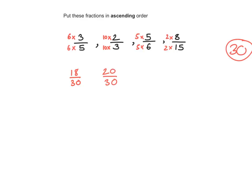The next one: 5 times 5 is 25, so that's 25 over 30. And 2 times 8 is 16, so that's 16 over 30.